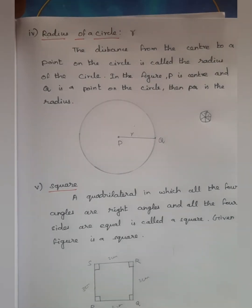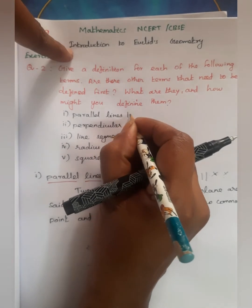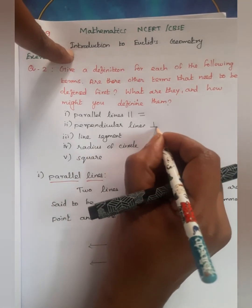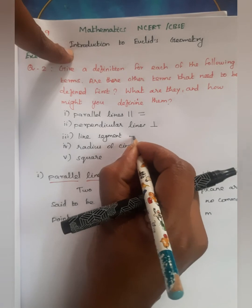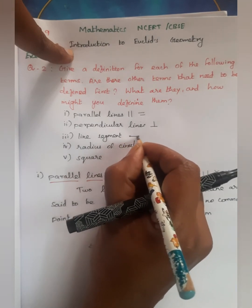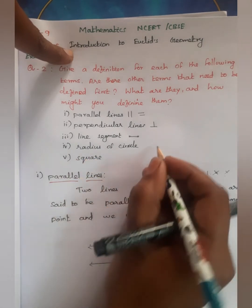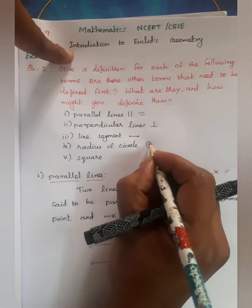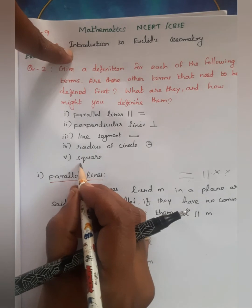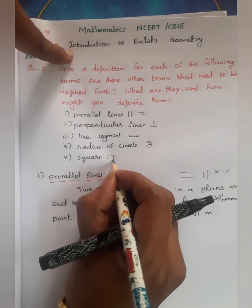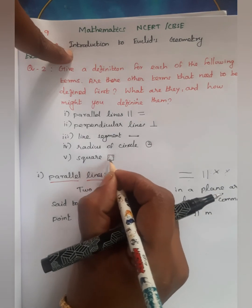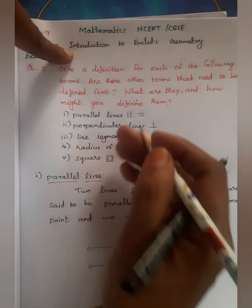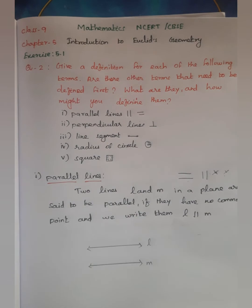Five definitions: parallel lines — two lines that do not touch; perpendicular lines — 90 degrees; line segment — a small part of a line between two points; radius of a circle — the distance from the center point; square — four sides equal and right angles. This is correct.